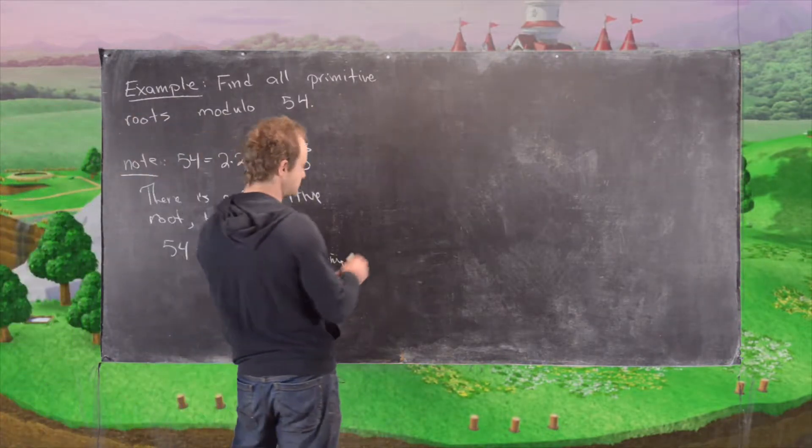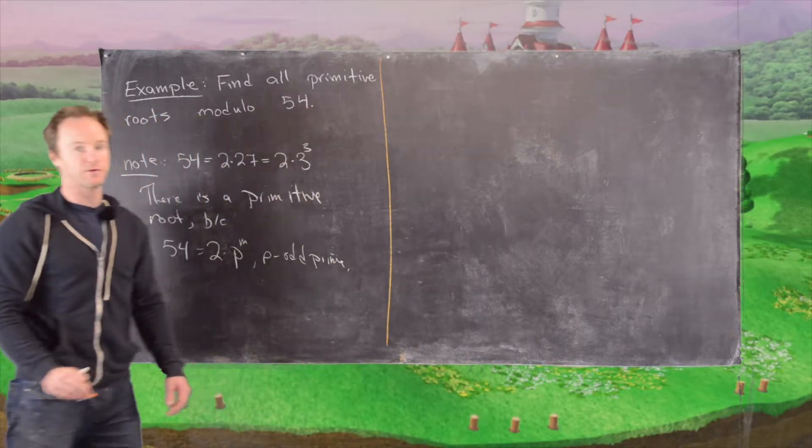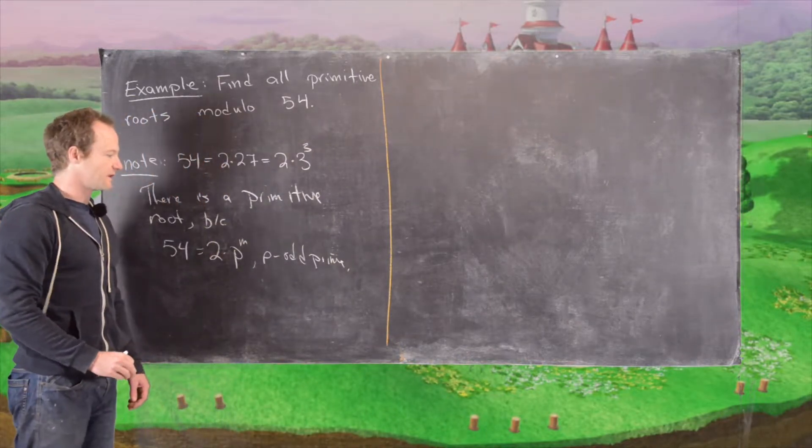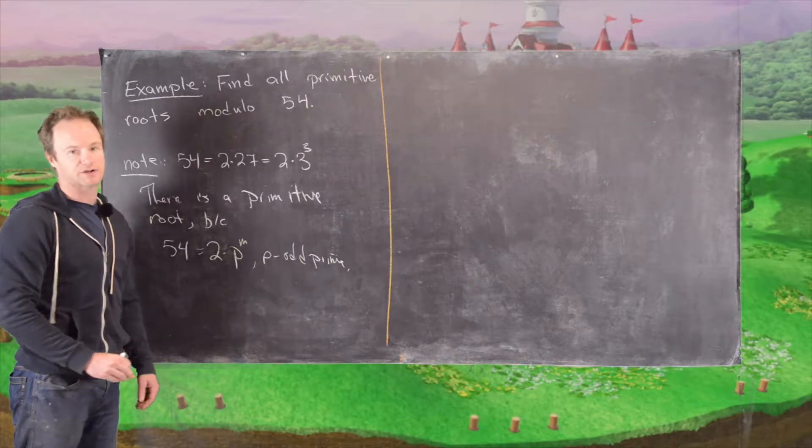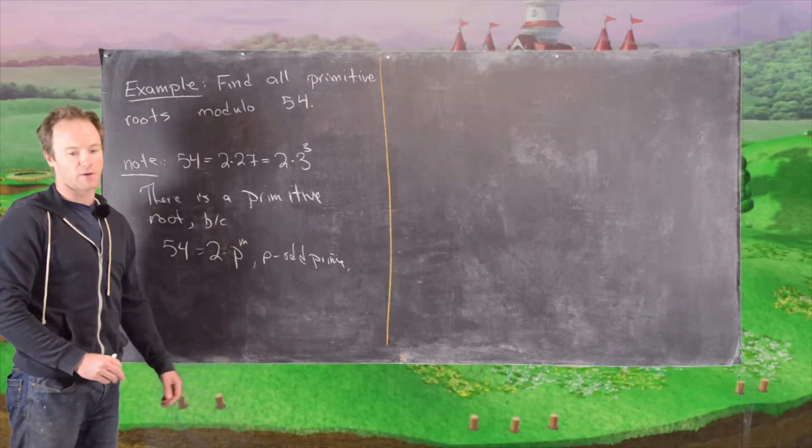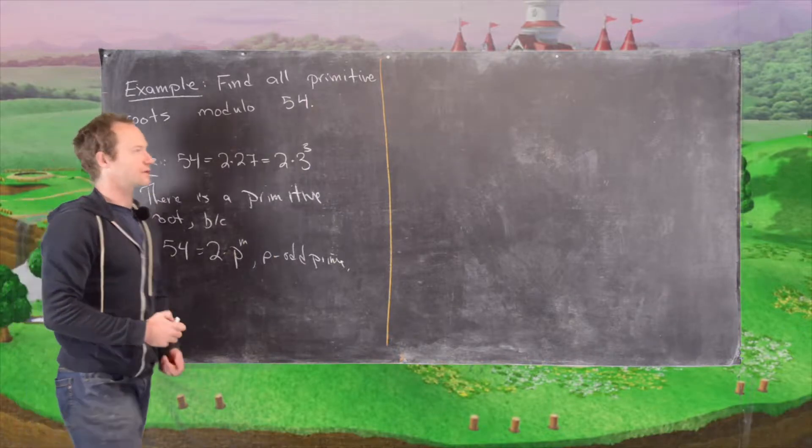So now from here we're going to use the method of proof when we built up to proving the classification theorem in order to find the first primitive root modulo 54 and then use another result to get all primitive roots modulo 54.